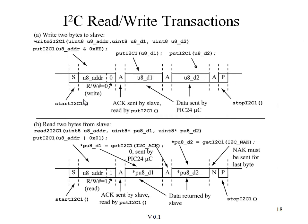In summary, a typical write program begins with a start function, followed by a put function to output the address with the read/write bit set to zero. All following transactions up to the end consist of a series of puts, writing data from the PIC to a peripheral. In contrast, a read transaction has a one for the read/write bit. There's a start and a stop at both ends; we first write the address with the one bit and wait for an acknowledge, then read data back using the get I2C function. To signal the end of the transaction, we don't acknowledge the last element, which causes the peripheral to cease sending data, and the PIC then sends a stop.